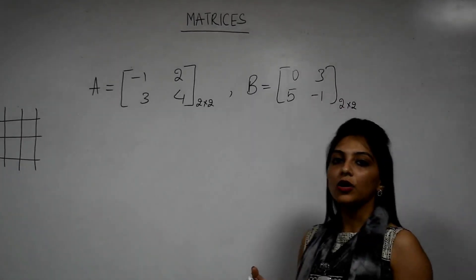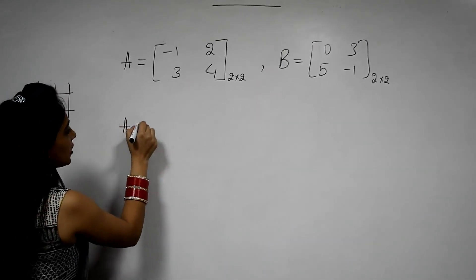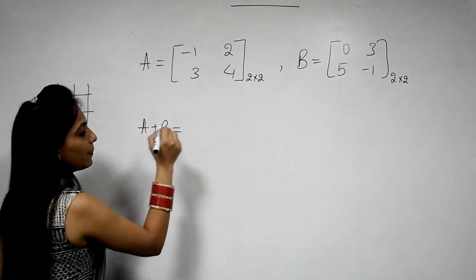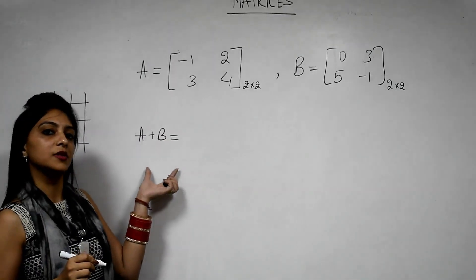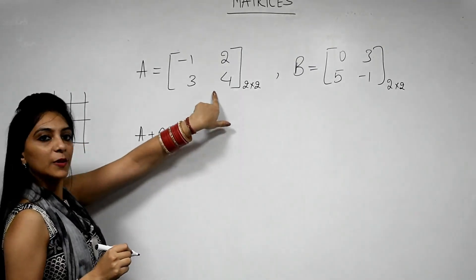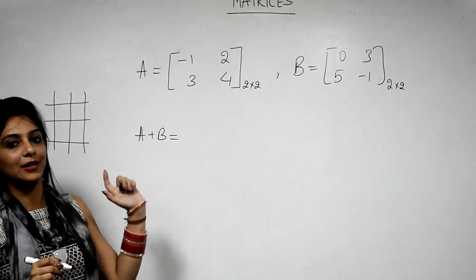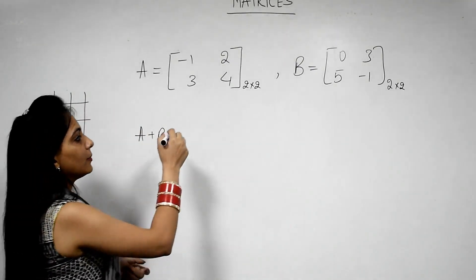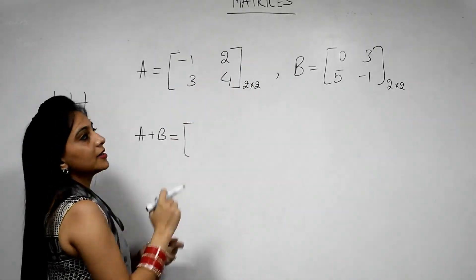Now when we talk about addition of matrix, means we are adding these two matrices. So we have to find A plus B. Now always remember, we can add two matrices only if their order is same. Order of this matrix is 2 by 2 and also order of this matrix is 2 by 2. So we can add the matrices. Now how to add the matrices? We will add the corresponding elements.